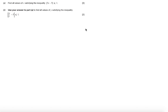In this question we're asked to find all values of x satisfying the inequality 3x minus 5 is less than or equal to 1. To remove the modulus sign, we are going to consider 3x minus 5 in relation to plus and minus 1.